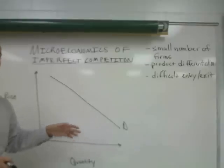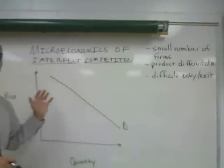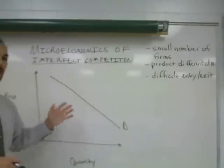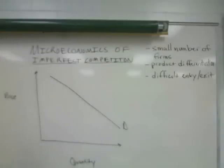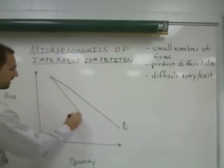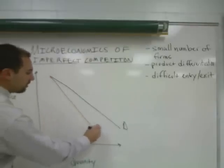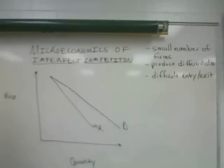The demand curve has a negative slope because of the income effect, the substitution effect, and diminishing marginal utility, which we'll cover in other review sessions. Another characteristic of the imperfectly competitive firm is that it has a negatively sloped marginal revenue curve that lies inside of the firm's demand curve.